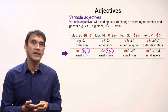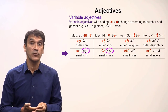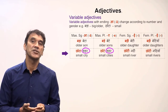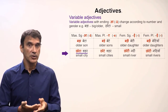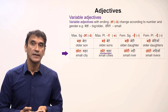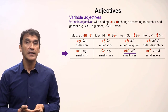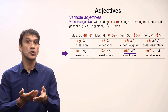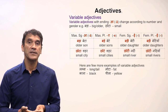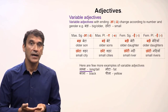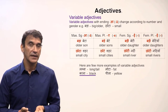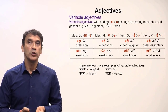Note that the masculine noun 'shahar' (city) does not change in plural — it stays the same in singular and plural. It is the adjective that changes in plural: 'chota shahar' (a small city), 'chote shahar' (small cities). Similarly, 'choti nadi' (a small river) — 'nadi' is feminine, that's why it is 'choti' — and 'choti nadiyaan' (small rivers). Here are a few more examples of variable adjectives: 'lamba' (long/tall), 'mota' (fat), 'kala' (black), 'peela' (yellow) — all of them have the ending -a.